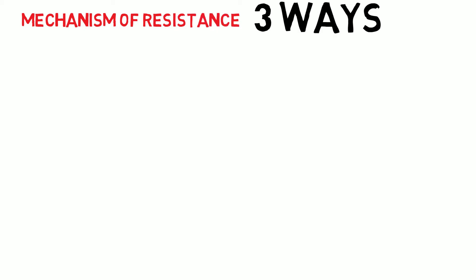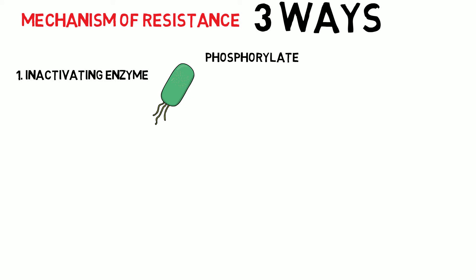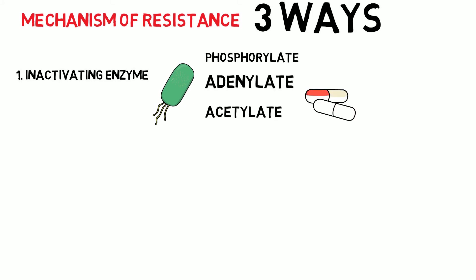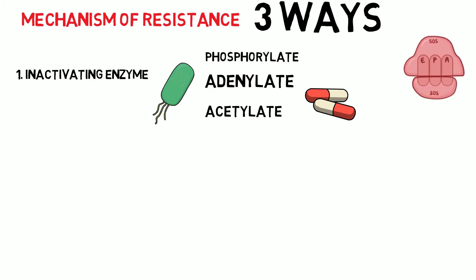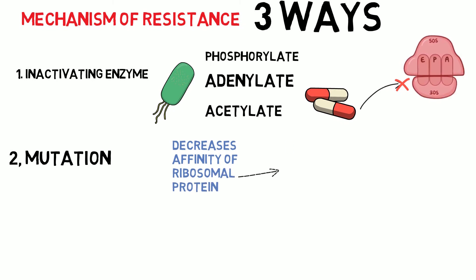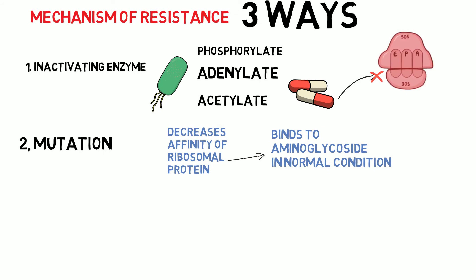Mechanism of resistance occurs in three ways. First, inactivating enzymes produced by bacteria either phosphorylate, adenylate, or acetylate the antibiotic; the resulting conjugated antibiotic cannot bind to the target ribosome. Second, there may be a mutation that decreases the affinity of the ribosomal protein that normally binds aminoglycosides. Third, there may be decreased efficiency of the drug transport mechanism.